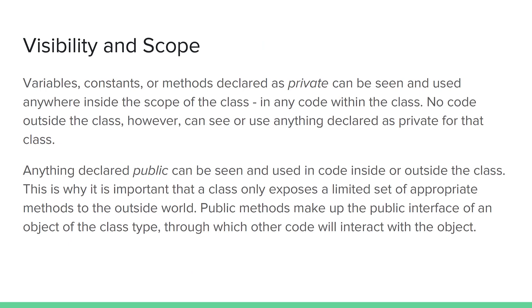Visibility modifiers don't change the scope of variables or methods within a class. Anything declared as an instance variable at the top of a class is still visible throughout all of the code in the class. Methods declared as private within the class can still be called from other methods within the class. The only impact of a visibility modifier has to do with external visibility — whether someone from outside the object can directly access a variable or method by name.